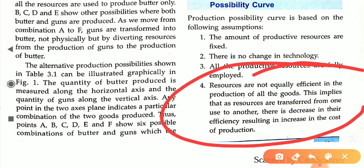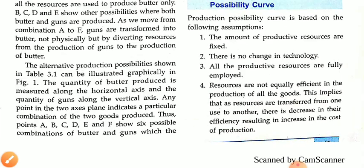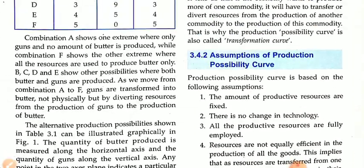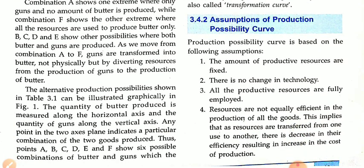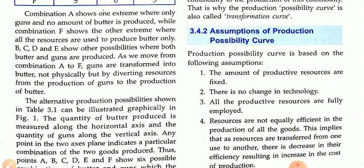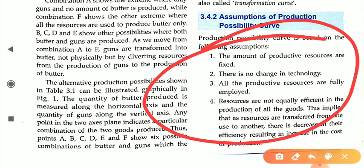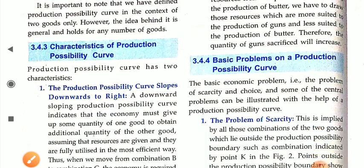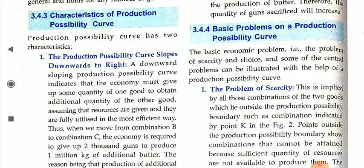Because resources are not equally efficient, when resources are transferred from one use to another, their efficiency decreases, resulting in an increase in the cost of production. These are the four assumptions of the Production Possibility Curve. Without these assumptions, the PPC does not hold. Always keep these four assumptions in mind when working with the PPC.